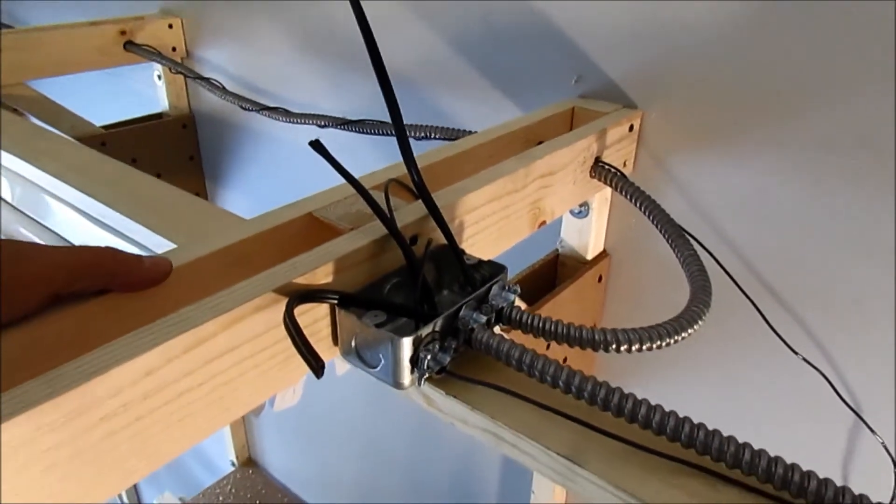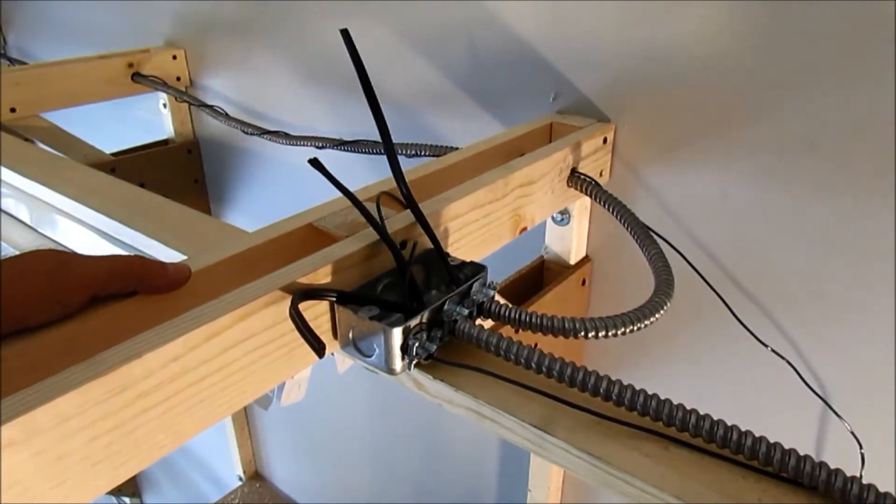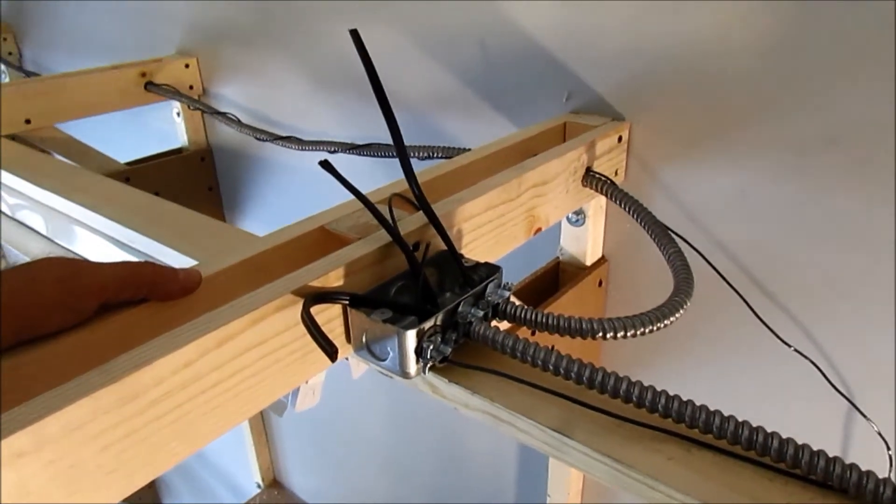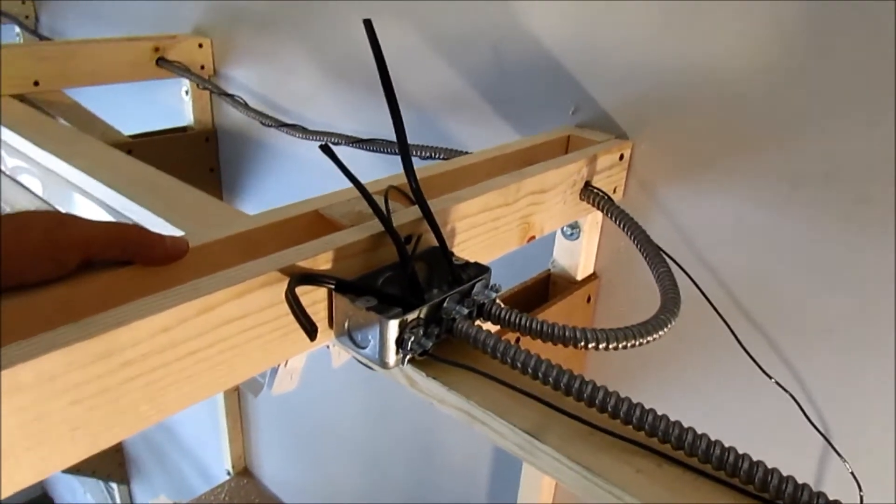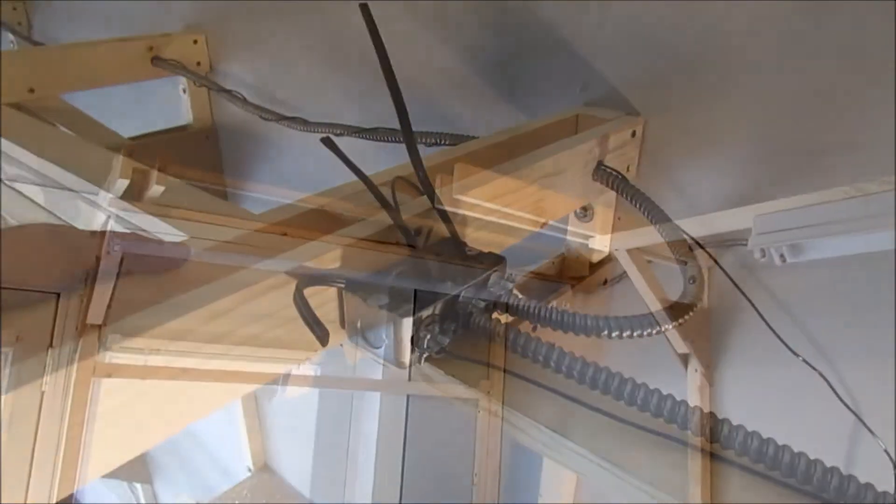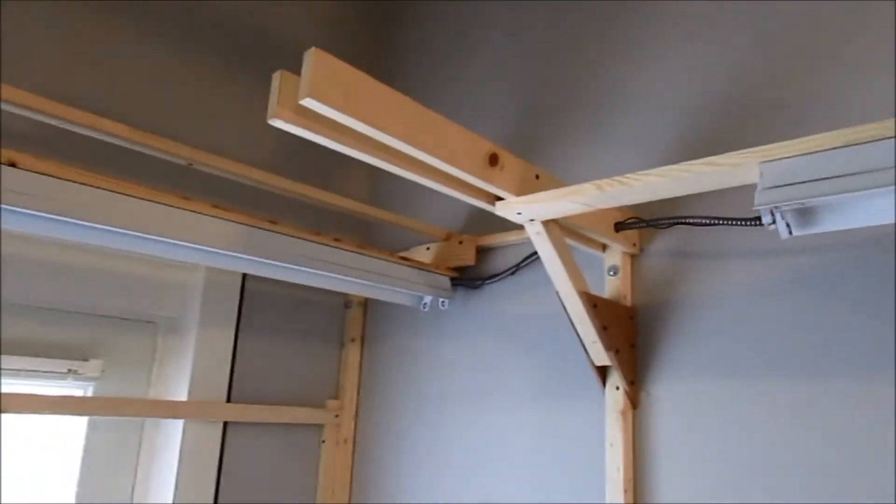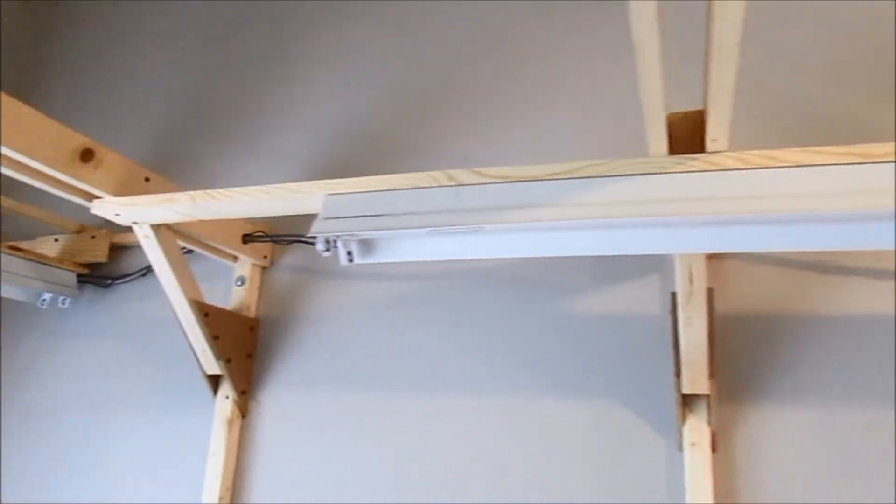So there's what the inside of the junction box looks like and I have all the wires running into the junction box now. Now it's a matter of just trimming them up and attaching them together and putting some wire nuts on them.